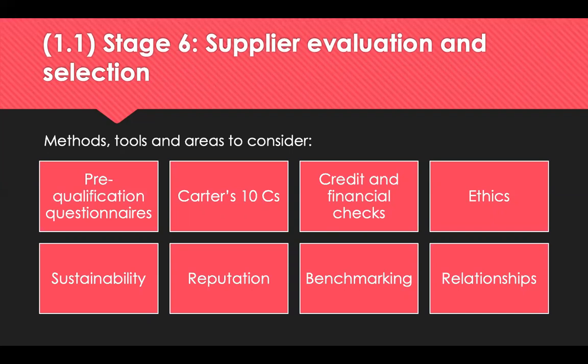Credit checks and financial checks gather information from various sources to produce a score reflecting how financially stable the supplier is and whether they pose a risk. Finance checks ensure the supplier is performing well and likely to remain in business for the foreseeable future. Reviewing a supplier's code of conduct, code of ethics, health and safety policy, and corporate social responsibility policy establishes whether they are reputable organisations. Reputation factors include quality, sustainability, and ethics.